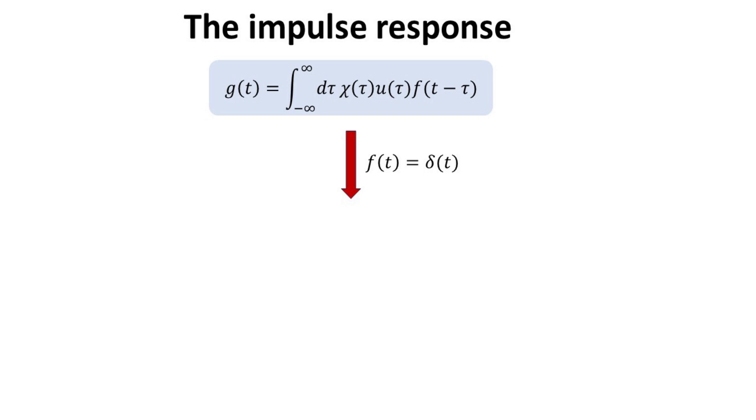Let the input Ft be the impulse function. Then we see the output Gt, in response to the impulse function, precisely yields the function chi multiplies by the step function, which is why it is aptly called the impulse response. As such, chi must then be a real function, as required for any physical measurable impulse response.